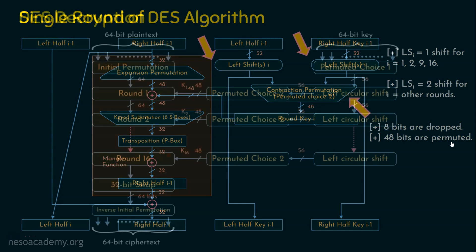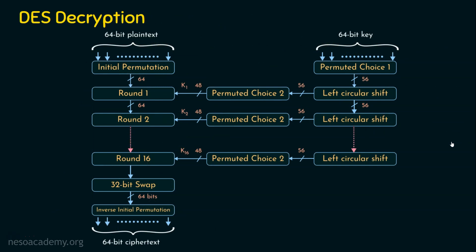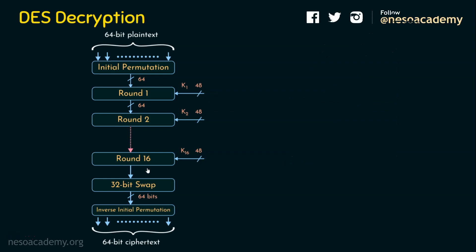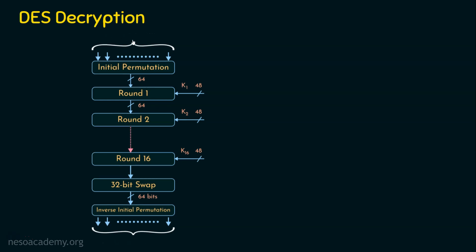Let's move on to the decryption process in DES. The decryption process is the reverse of the encryption process. In encryption, we input plaintext and get ciphertext as output. In decryption, we input ciphertext and generate plaintext. So the 64-bit ciphertext is given as input and the 64-bit plaintext is the output. The ciphertext is fed into the initial permutation because in encryption, the ciphertext was the output of the inverse initial permutation, and to reverse that we apply the initial permutation.